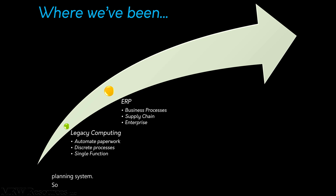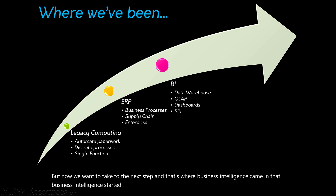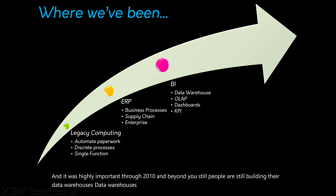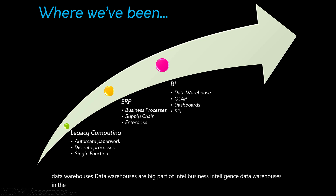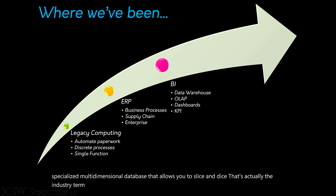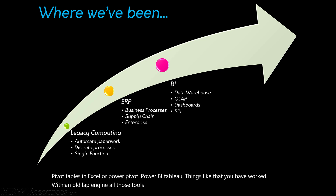At that point we had all this information and were finally talking throughout the organization, so we wanted to take it to the next step. That's where business intelligence came in, gaining a foothold in the mid to late 1990s and remaining highly important through 2010 and beyond. People are still building data warehouses today. Data warehouses and tools like OLAP — Online Analytic Processing — are a big part of business intelligence. OLAP is a specialized multidimensional database that allows you to slice and dice data from different dimensions very quickly. If you've ever worked with pivot tables in Excel, PowerPivot, Power BI, or Tableau, you have worked with an OLAP engine.